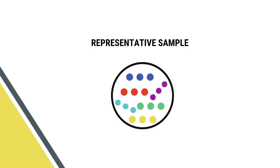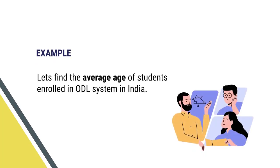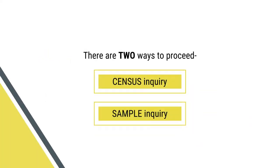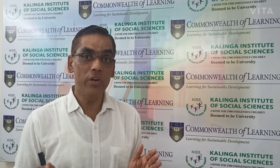Therefore, it is very important to have complete clarity and complete understanding of the two important terms: one is sample, and the second one is population. To understand this concept, let us take an example. Let us find the average age of students enrolled in the ODL system in India. There are two ways to proceed: either with census enquiry or with sample enquiry. In case of census enquiry, we have to consider the whole population — the whole universe which constitutes the students of ODL.